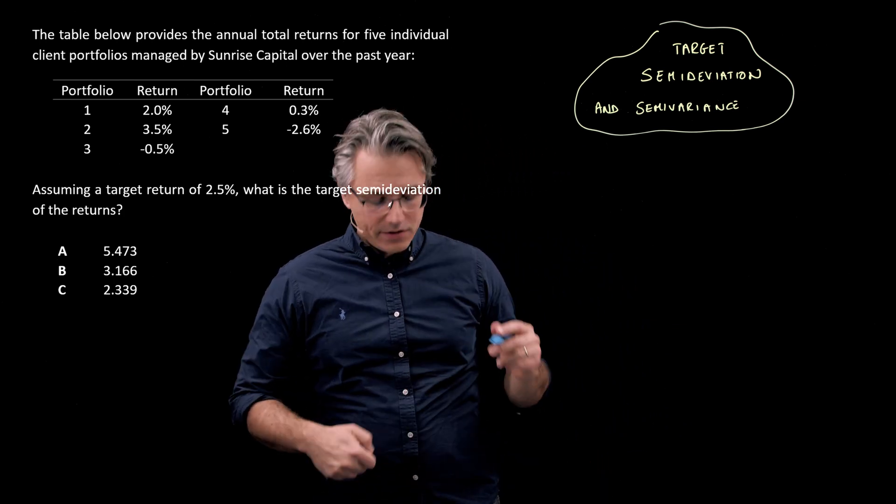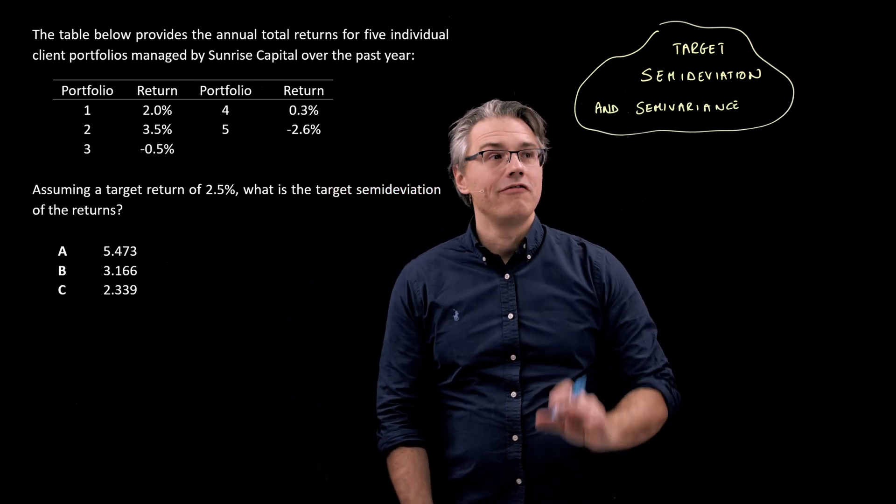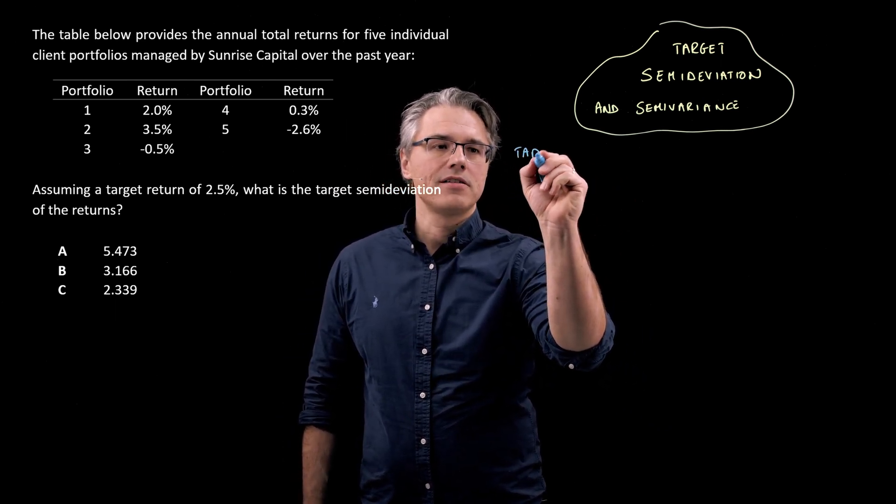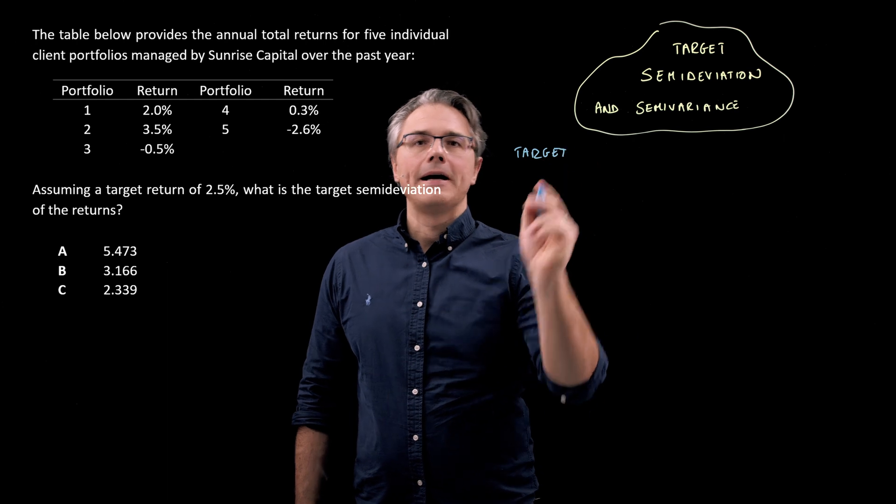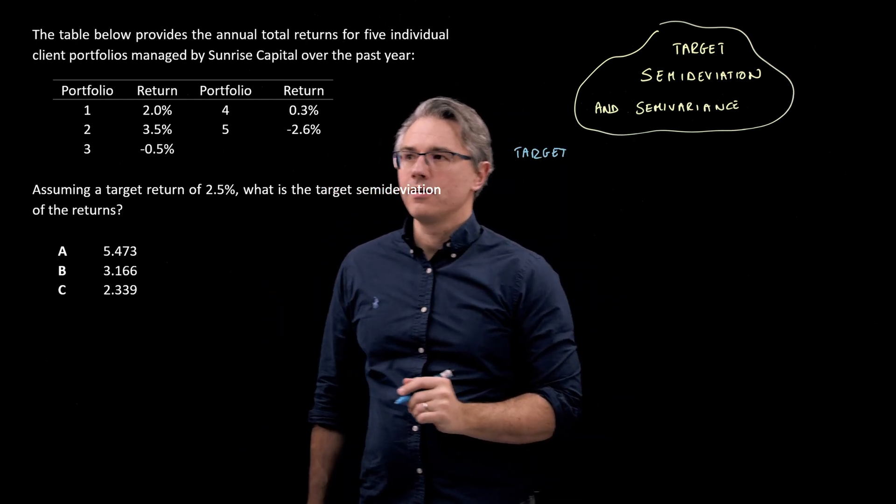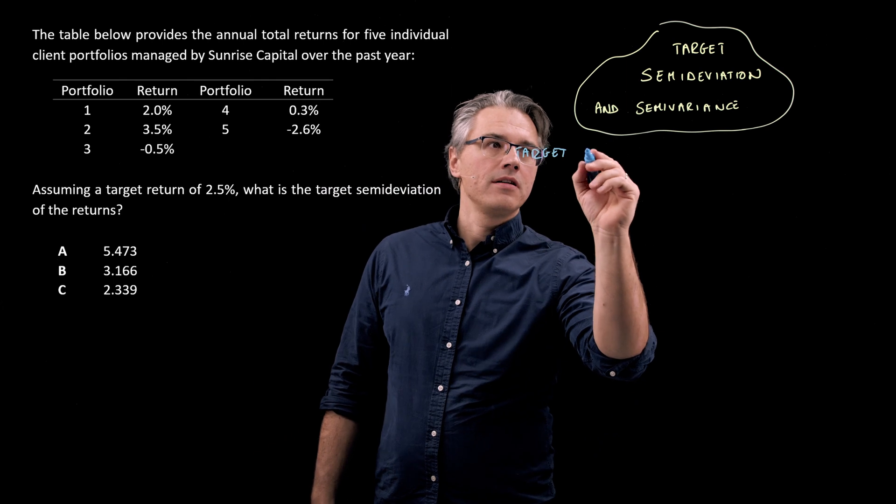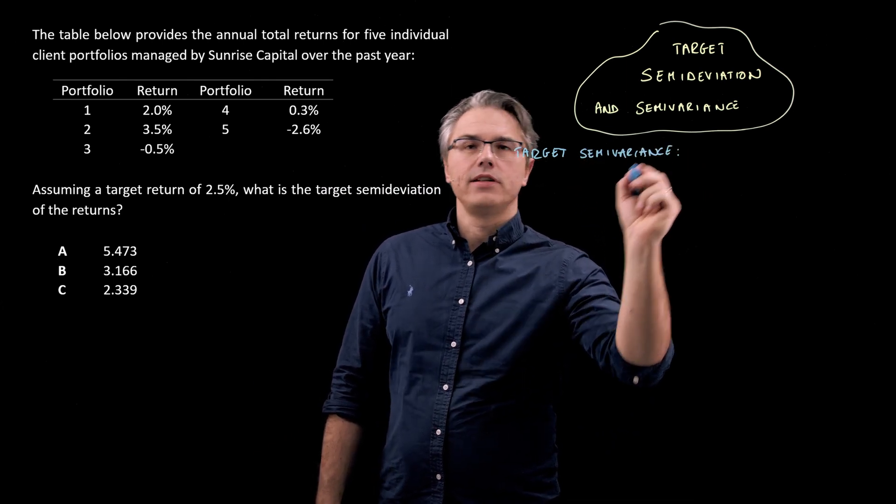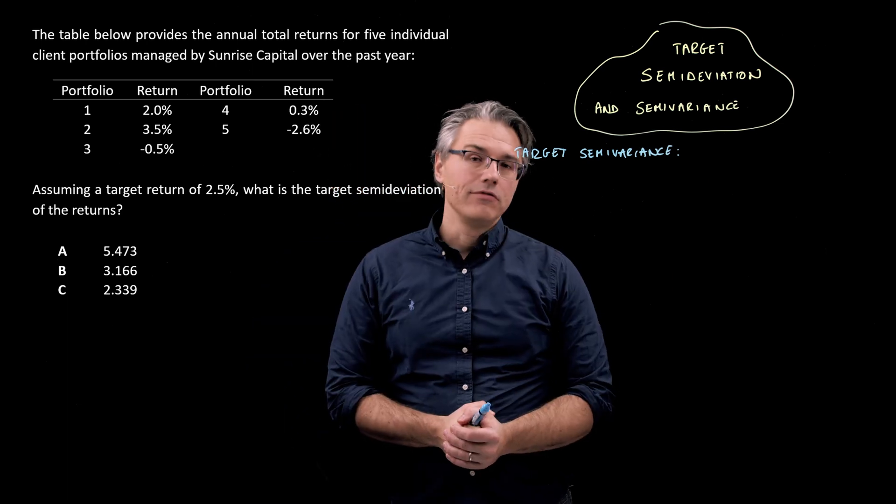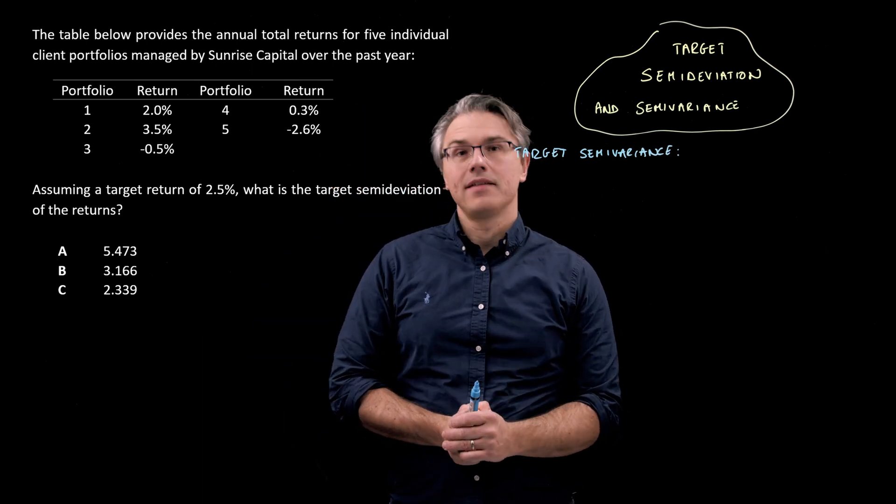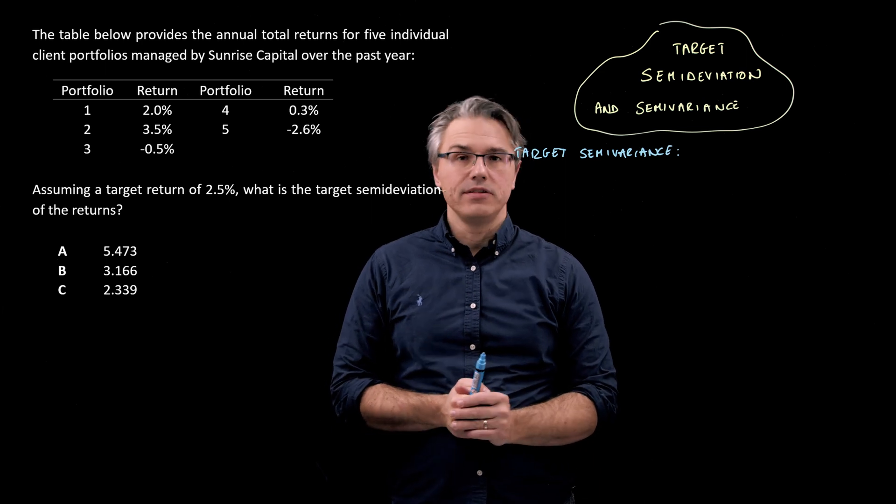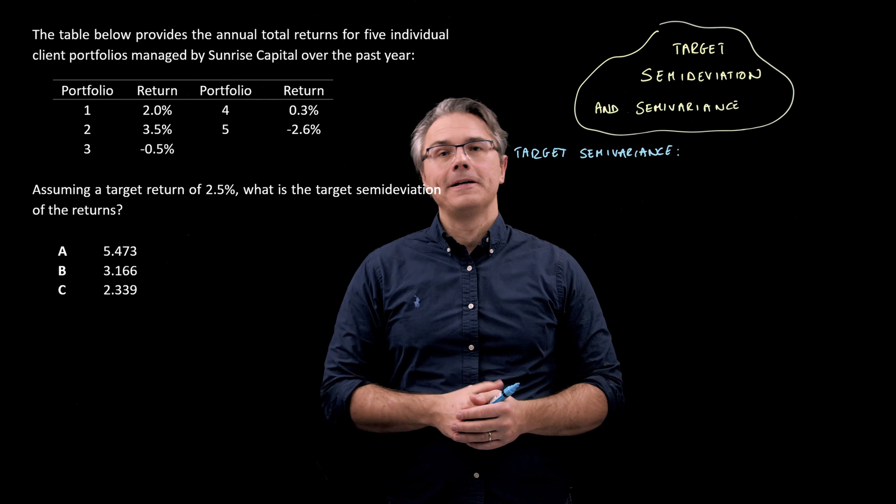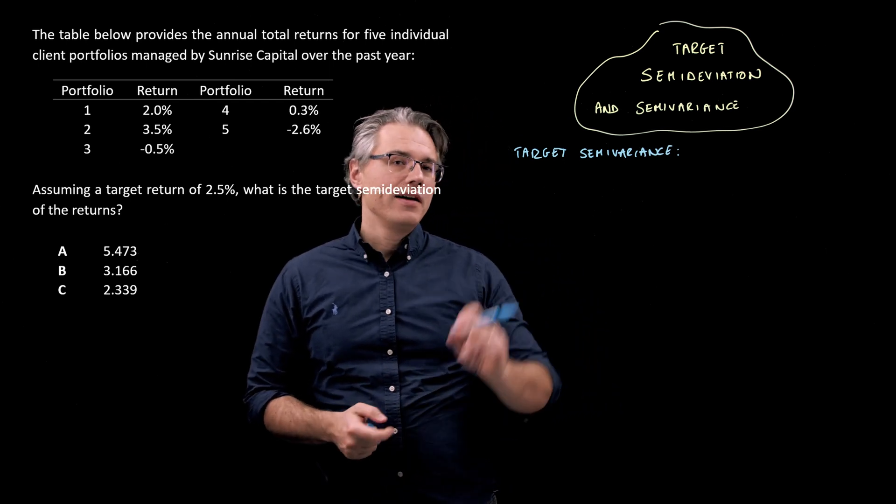Now the formula for target semi-variance. I'm going to start with target semi-variance and from that we'll go to target semi-deviation, which we are actually asked about here. So target semi-variance. And if you've watched my previous video on sample variance and sample standard deviation, you'll appreciate the relationship between the two. The standard deviation is the square root of variance.